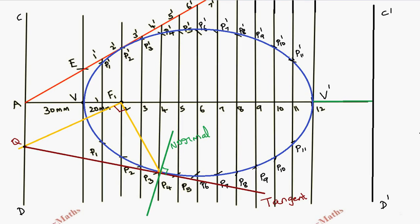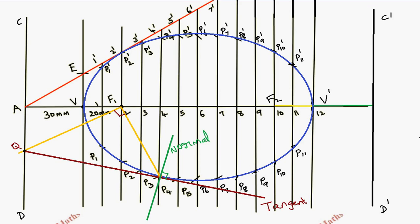We can also locate the other focus F2. Measure the distance from vertex V to focus F1, then mark the same measurement from the other vertex V dash. This locates the second focus F2. Thus we have completed the construction of the ellipse along with the drawing of the tangent and normal.